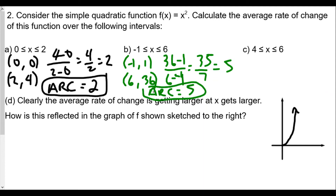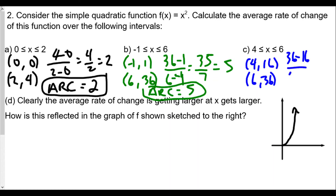For the third interval, when x equals 4, f(4) equals 16 because 4 times 4 is 16. When x equals 6, f(6) equals 36. So 36 minus 16 over 6 minus 4 equals 20 over 2, and the average rate of change is 10.